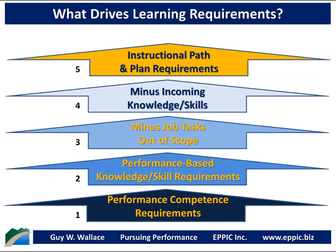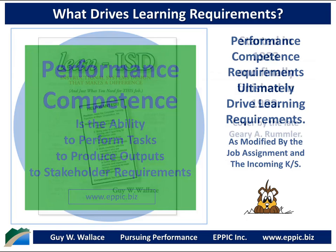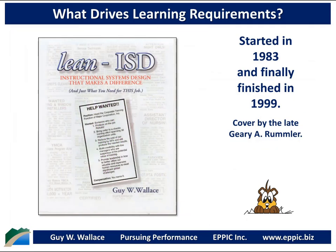Performance eyes first, individual eyes second. Performance competence requirements ultimately drive all the learning requirements, but only after being modified by the job assignment specifics and accounting for the incoming knowledge and skills. Performance competence is measurable — it's the ability to perform tasks to produce outputs to stakeholder requirements. This is all covered in my 1999 book, Lean ISD.